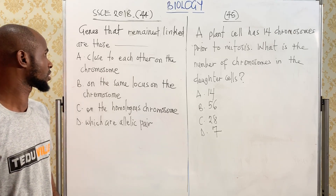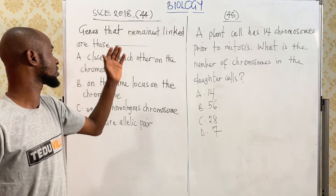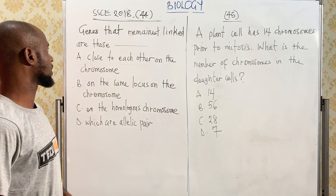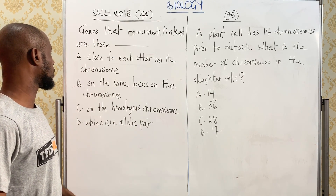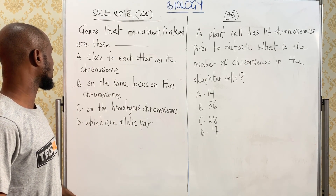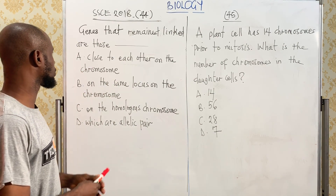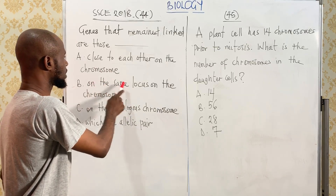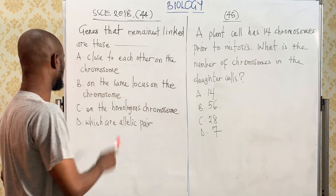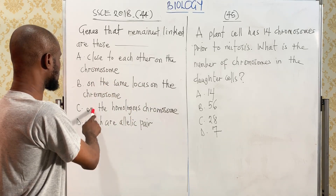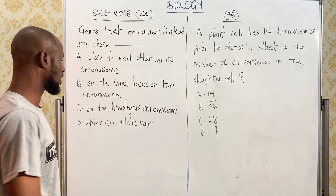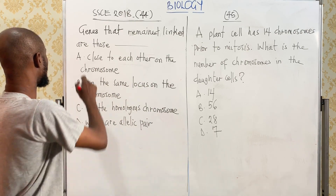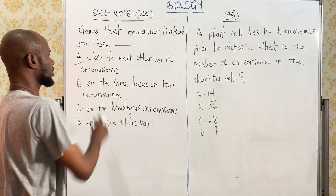Hello students and welcome to biology class. We have question 44: genes that remain linked are those that — A, close to each other on the chromosome; B, on the same locus on the chromosome; C, on the homologous chromosome; and D, which are a pair. The answer is genes that are close to each other.